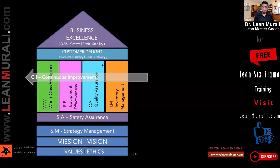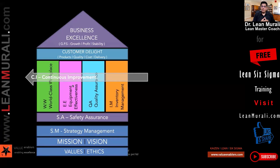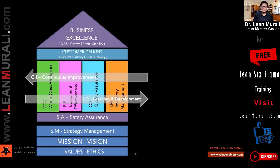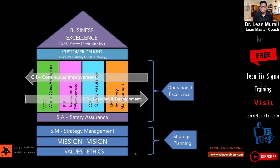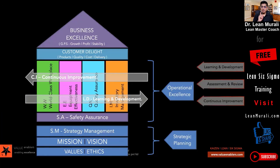What we generally miss out is continuous improvement, because each pillar cannot be best-in-class to start with. Some might be at point A — you have to take it to point B, then to point C. In quality, people debate between continuous and continual improvement; both are required — step change as well as gradual change. Learning and development, assessment and review, and continuous improvement are the three important dimensions of this entire model of excellence.